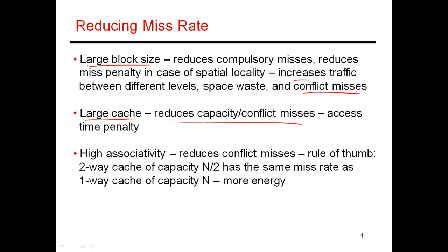Using a large cache should definitely reduce capacity and conflict misses, and possibly even compulsory misses. But a large cache takes longer to access, which is why larger caches are only used at L2, L3, or lower levels of the hierarchy. Using high associativity should reduce conflict misses. It has been observed that a 32KB two-way set-associative cache has the same miss rate as a direct-mapped 64KB cache. Going from one-way to two-way causes a steep drop in conflict misses, but going from two-way to four-way shows less improvement — the law of diminishing returns kicks in, and the drop in conflict misses lessens as you go from two-way to four-way to eight-way.